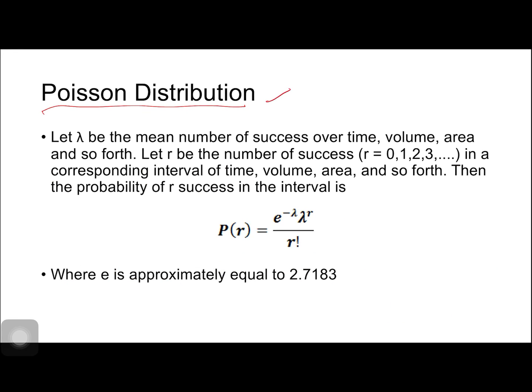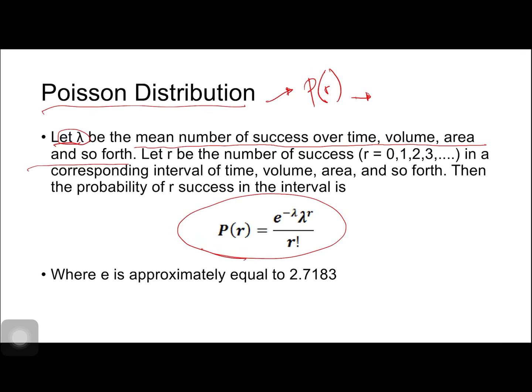Next is the Poisson distribution. This is again after probability of r successes out of n trials. The difference is this one is for events that are not repeated under identical conditions, unlike the binomial distribution. Here lambda is the mean number of successes over time, volume, area, and so forth. The formula is P(r) = e to the negative lambda times lambda to the r over r factorial, where e equals 2.7183, a constant.